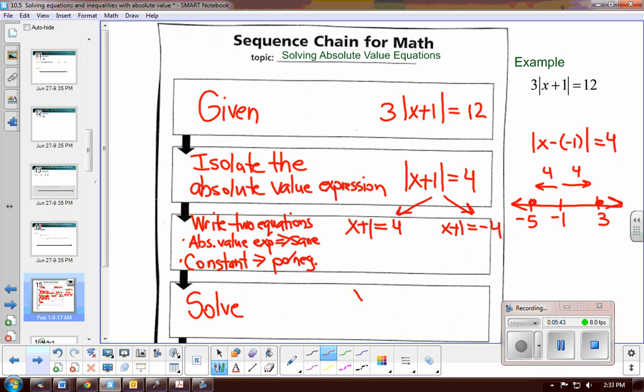So I subtract 1 from both sides, and I would get x equals 3, subtract 1, x equals negative 5. And now you'll notice the answers I got here in the algebraic approach match the answers I got in the graphical approach. So you should be able to verbally describe an absolute value equation. You should be able to graphically solve it and algebraically solve it also.